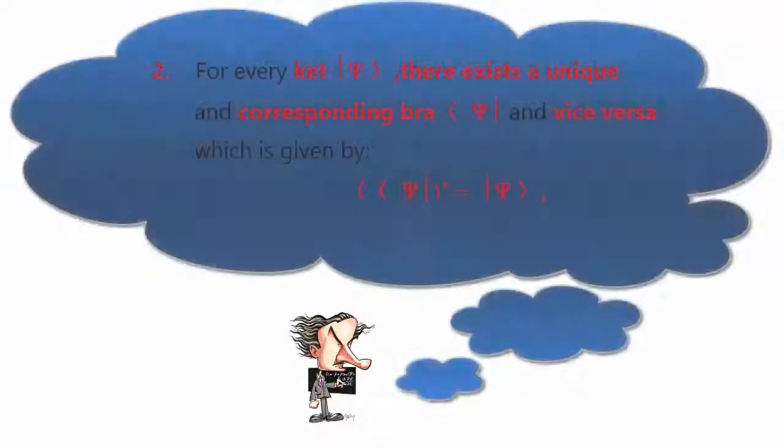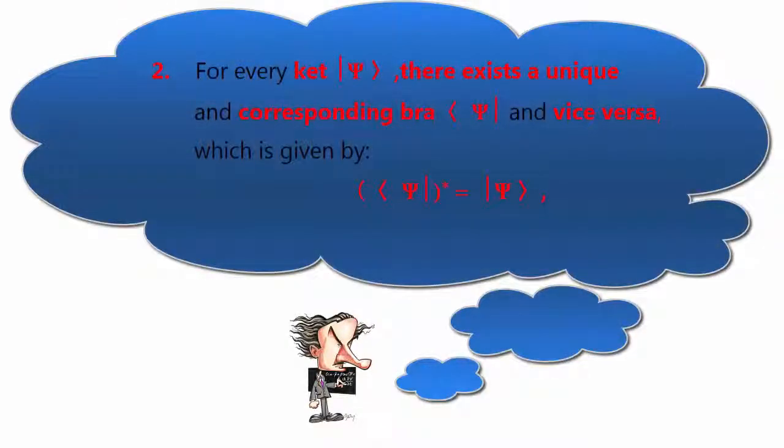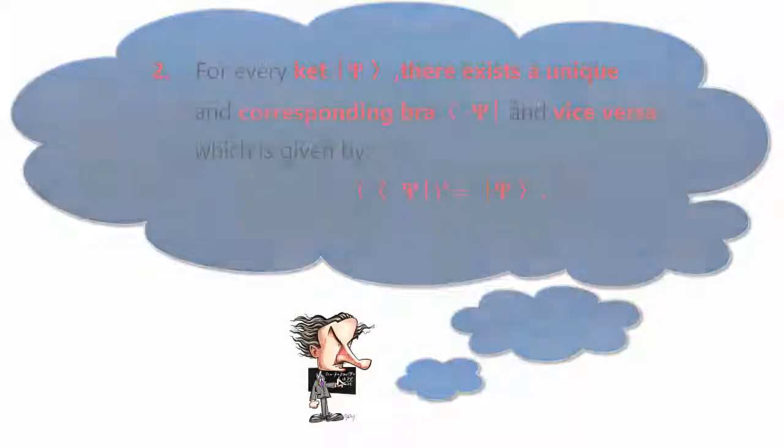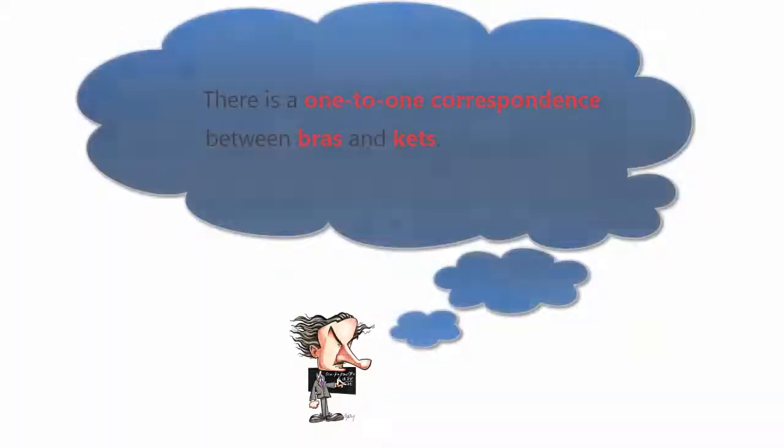2. For every ket |ψ⟩, there exists a unique and corresponding bra ⟨ψ| and vice versa, which is given by ⟨ψ|* = |ψ⟩. There is a one-to-one correspondence between bras and kets.